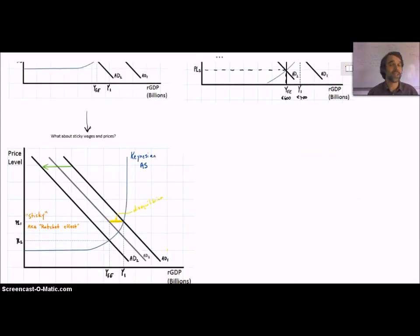One last point that needs to be made, and this is specific to the Keynesian viewpoint. Remember Keynesians, a lot of their theory is based on the fact that wages and prices are sticky and they won't decline. Remember, we also call this the ratchet effect, that is, it's easy to move them up, but it's hard to move them back down.